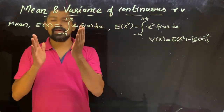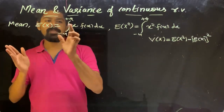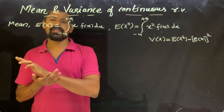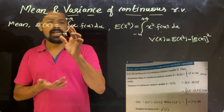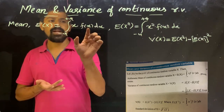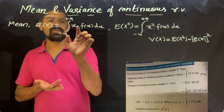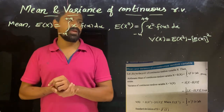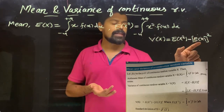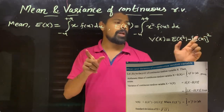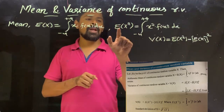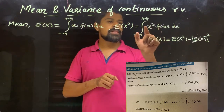As you can see, the problem involves independent variables. We integrate x into f(x) dx. The integral of e(x²) minus e(x) squared gives the variance. E(x) is the mean, and E(x²) is the expectation of x squared.